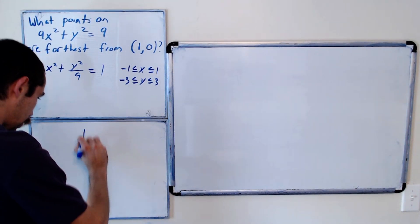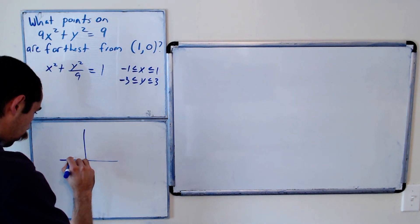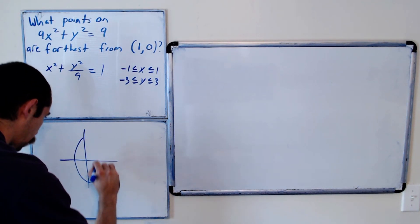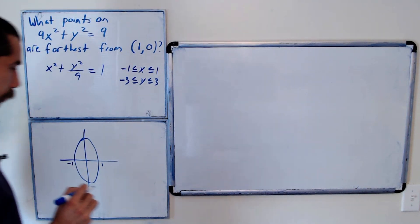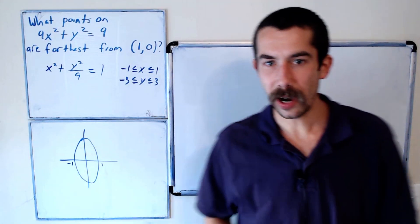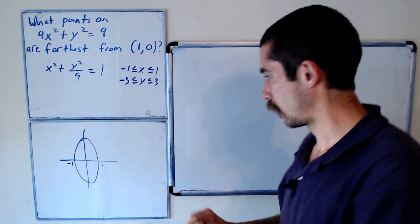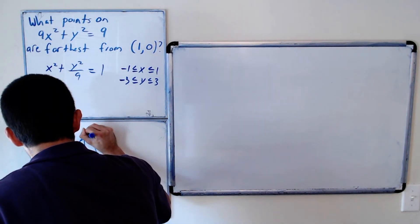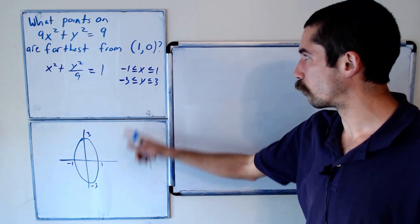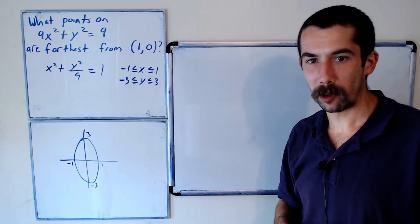So what this looks like is this oval here. We want to find the point on this oval that's furthest from the point (1, 0).